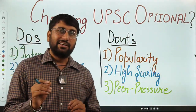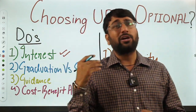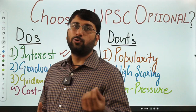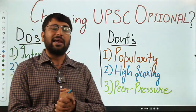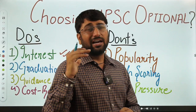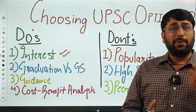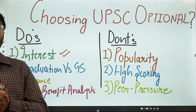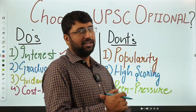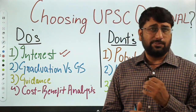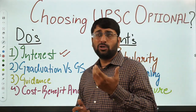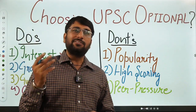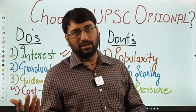So the first crucial factor is to identify your interest. The way to explore this is to pick up 2-4 basic books and try reading them - on that basis you can identify which subject you're genuinely interested in. If you have already studied a subject or studied its basics, that can also be a good criterion. In graduation, some subjects you studied with full engagement and interest, and others you just read to score marks - that distinction can help identify your interest area.